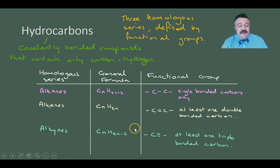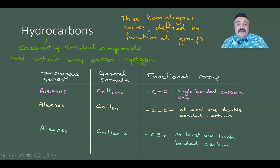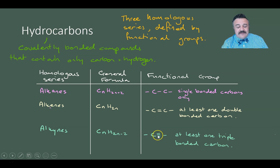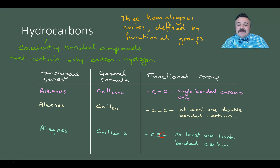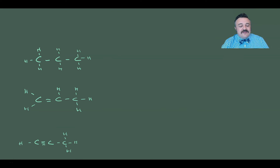Then we have alkynes. An alkyne has a general formula of CₙH₂ₙ₋₂, because there's a triple bond — essentially an extra double bond — which takes another two hydrogens out of the mix. This carbon still has four neutral bonds, which makes it a neutral carbon. So that's our three series: alkanes, alkenes, and alkynes.